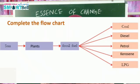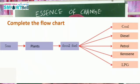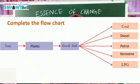The flowchart shows: energy from the sun is absorbed by plants and they synthesize their own food through photosynthesis. That food is received by animals. Then, plants and animals decay under the soil for millions of years and become fossil fuels. The examples of fossil fuels are coal, kerosene, diesel, petrol, and LPG.